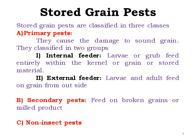First is the primary pest. They cause damage to the sound grain or whole grain. It is classified into two groups: internal feeders and external feeders. In internal feeders, larvae or grubs feed entirely within the kernel or grain or stored material. In external feeders, larvae and adults feed on the grain from the outside.